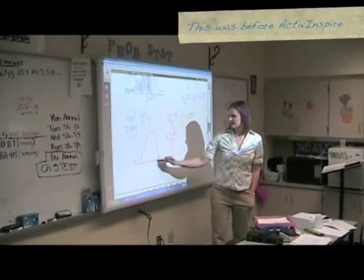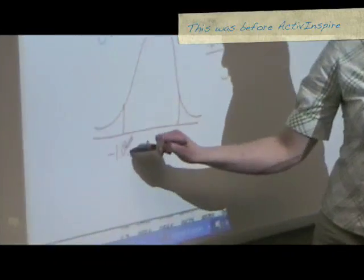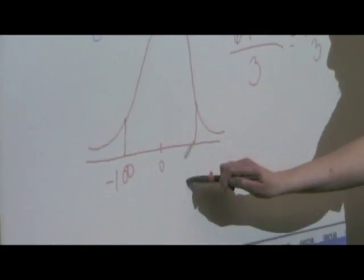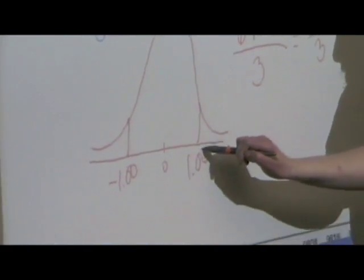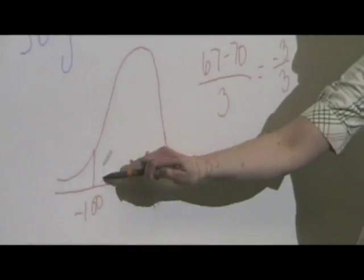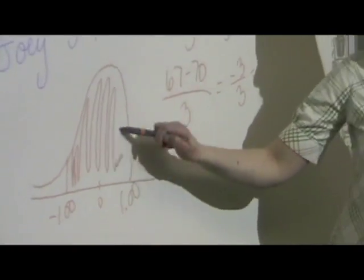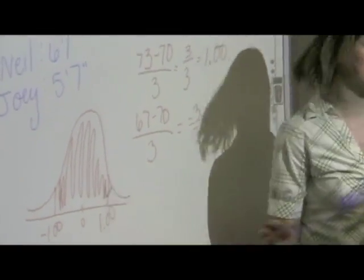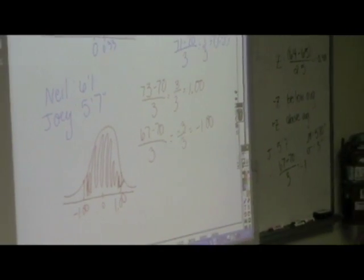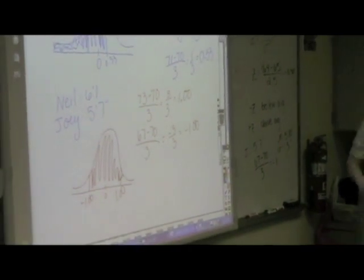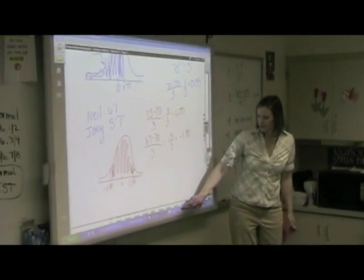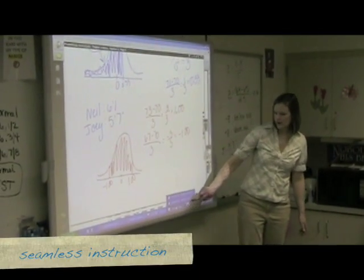So here's Joey over here at negative one, and here's Neil over here at positive one — above average. So yesterday with the empirical rule, we already learned that 68% of the population is going to be within one standard deviation.